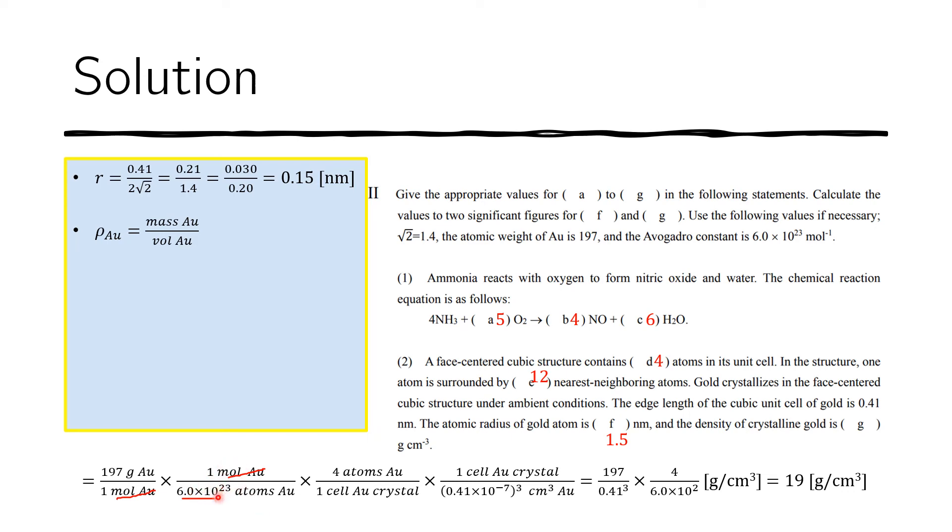So in one mole, there are this much atoms of gold. And that's from this given here, Avogadro constant. And then we also know that four atoms of gold are in every cell of the AU crystal. And that's from letter D here because it's FCC. And so we write that.